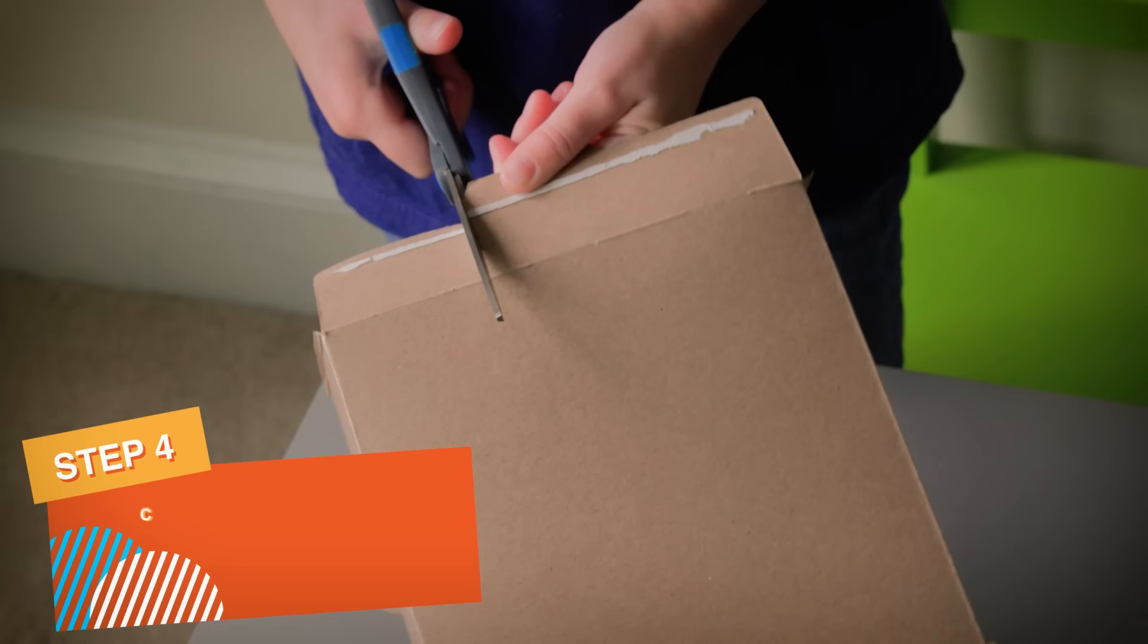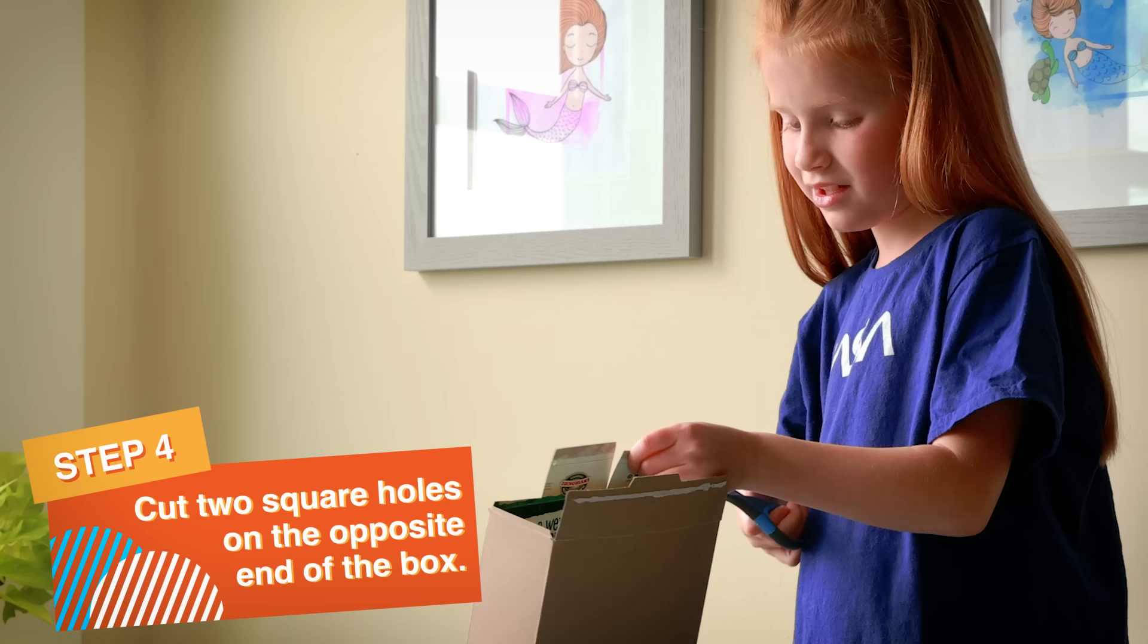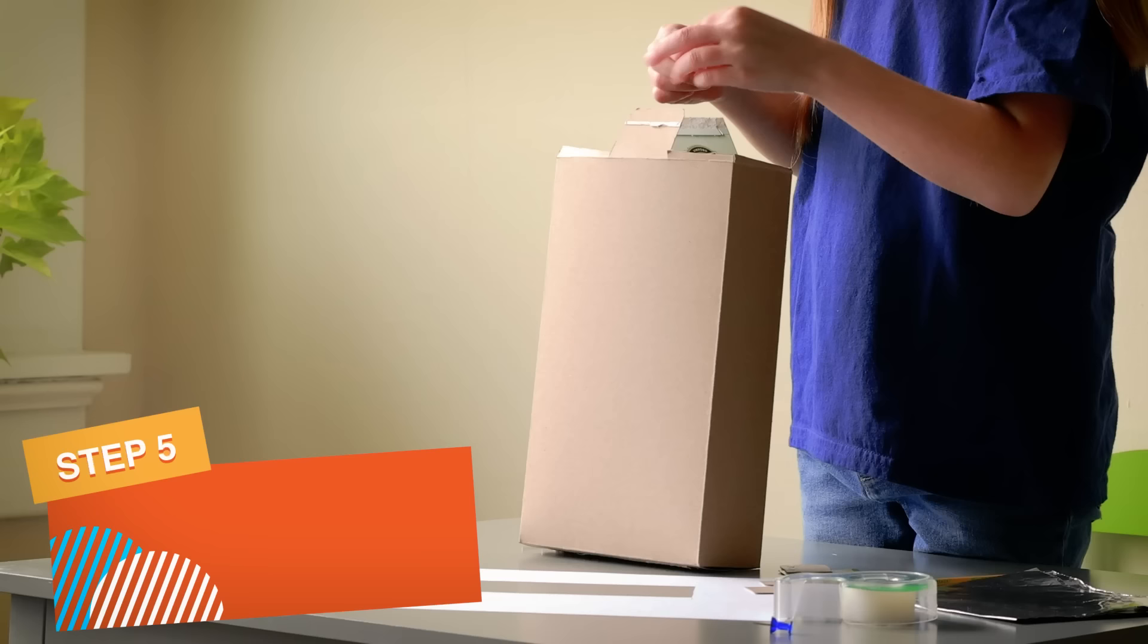Next, cut two square holes on the opposite end of the box, one on the left and one on the right. If you're using a cereal box, tape up the middle to help everything stay together.